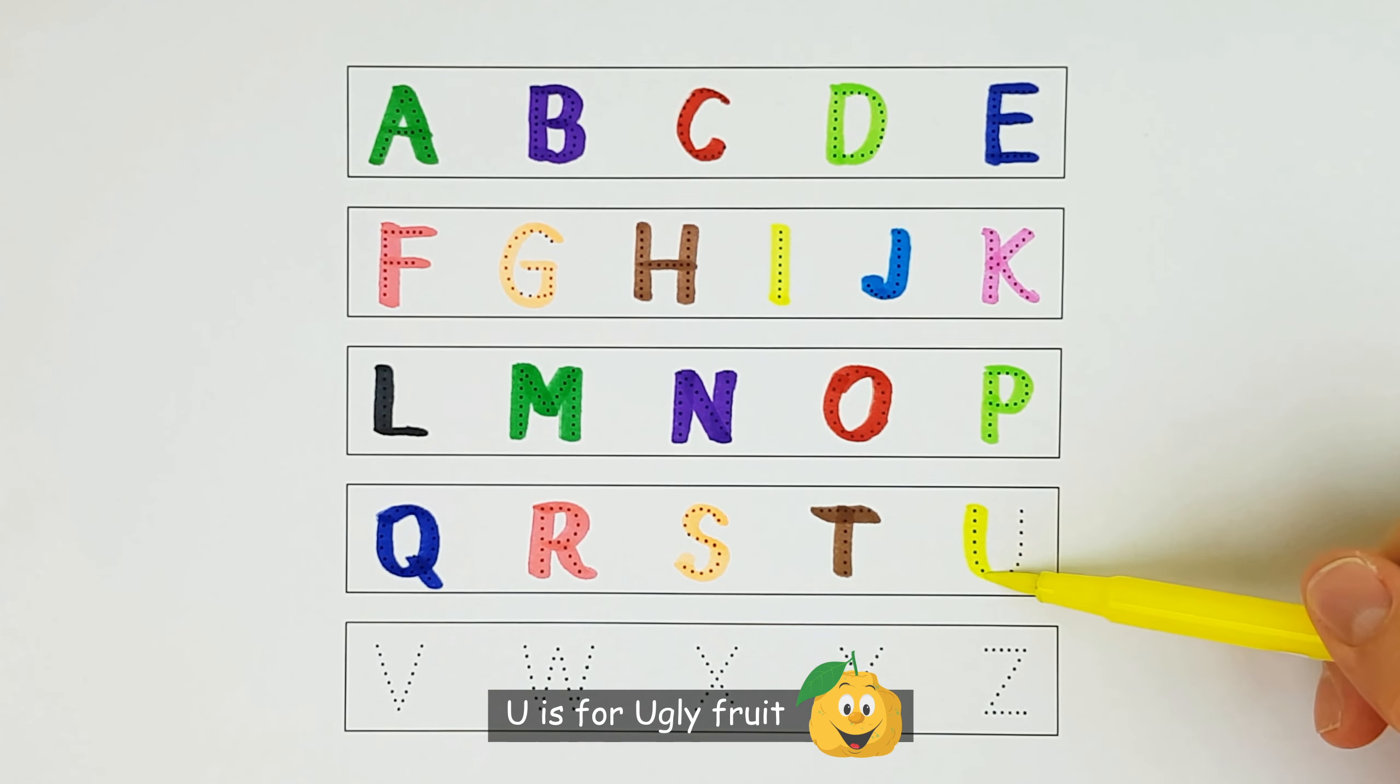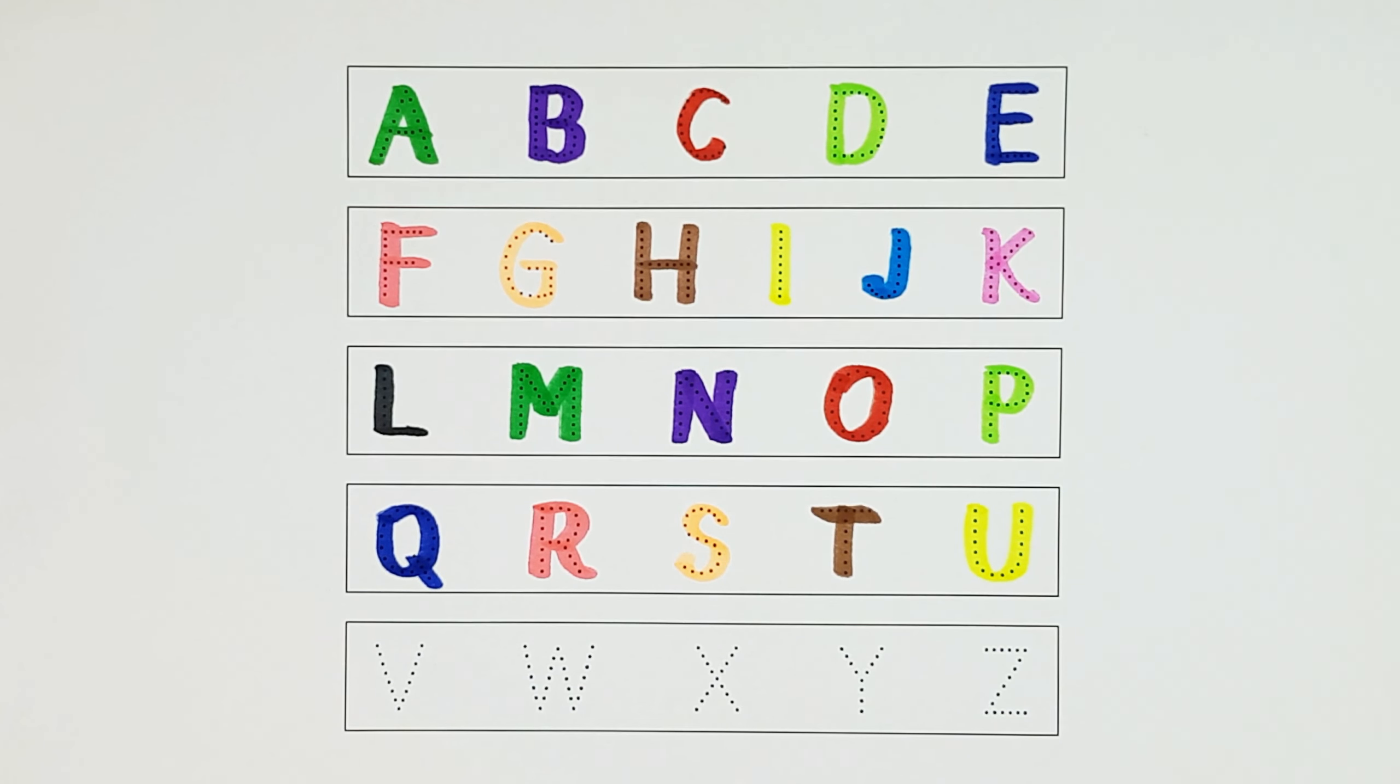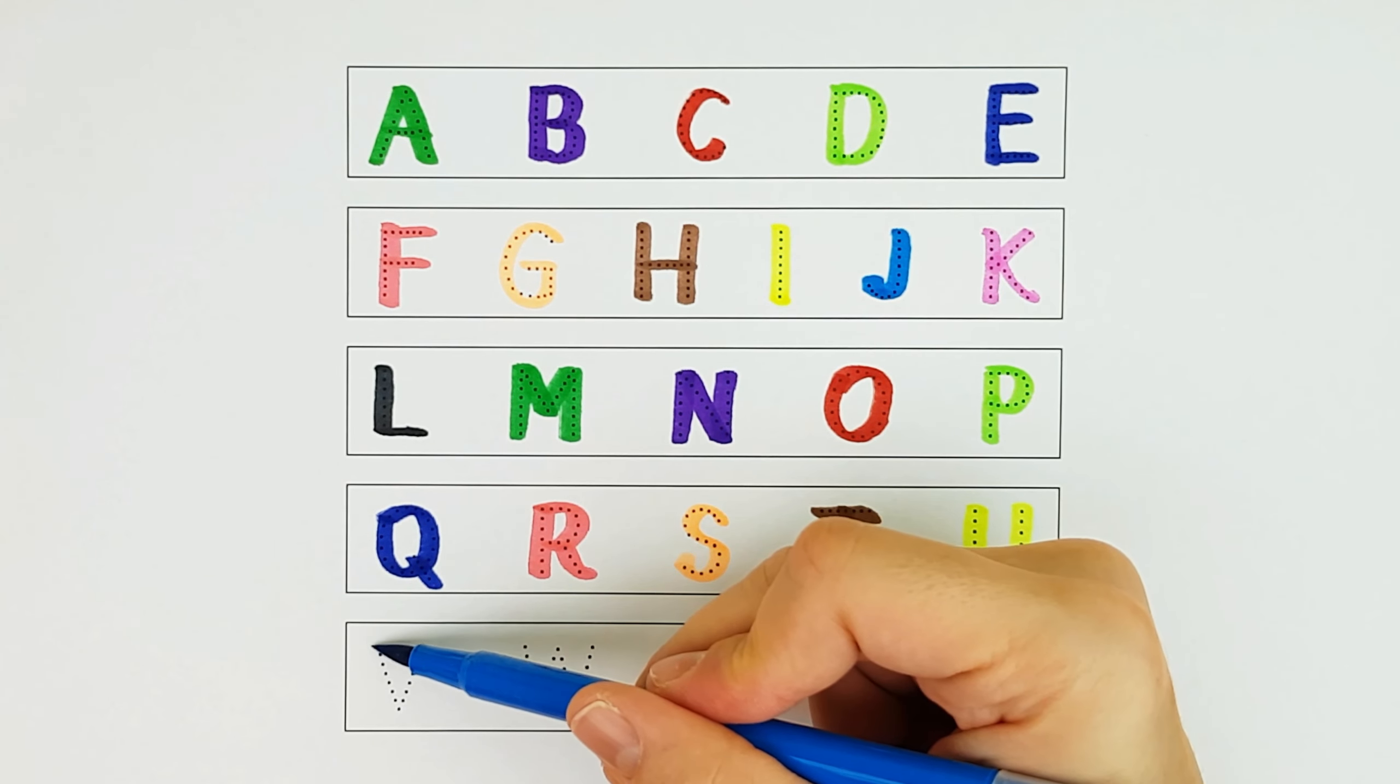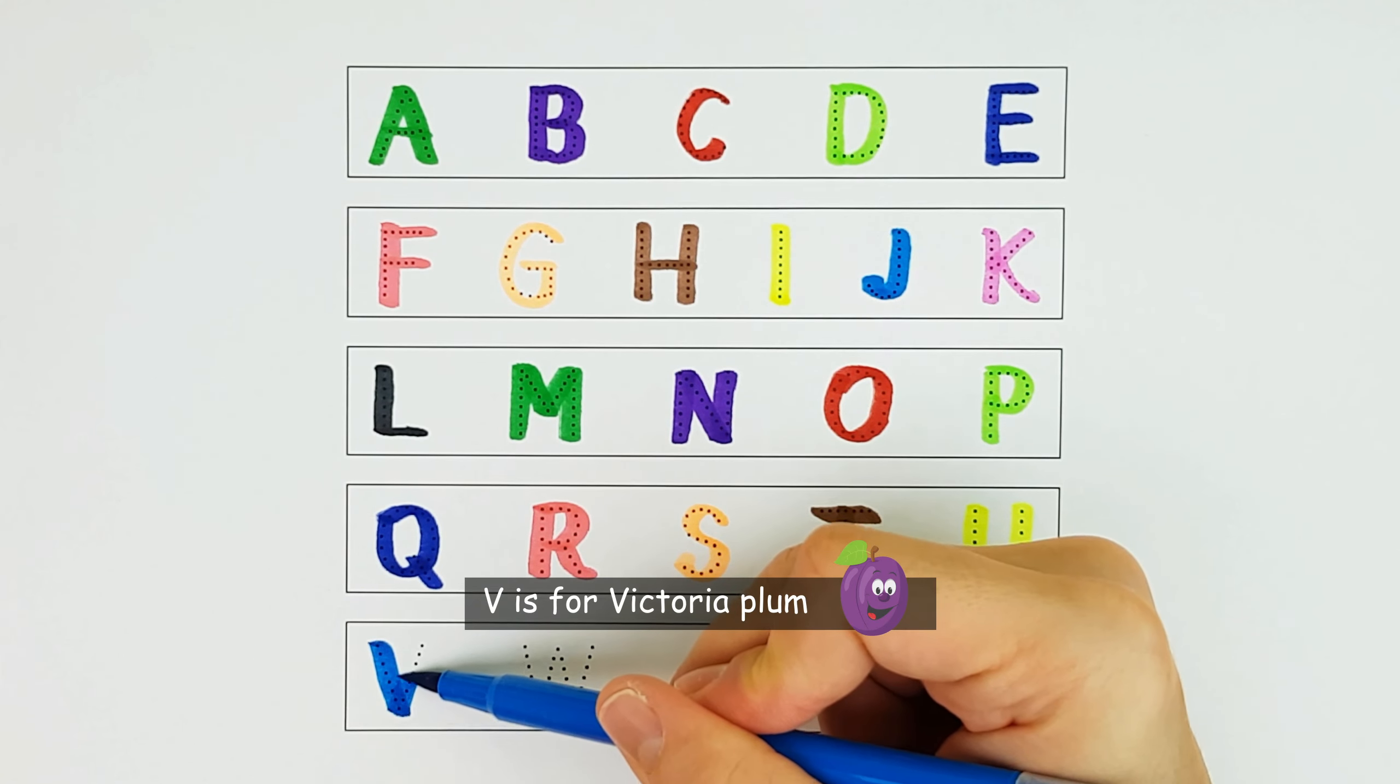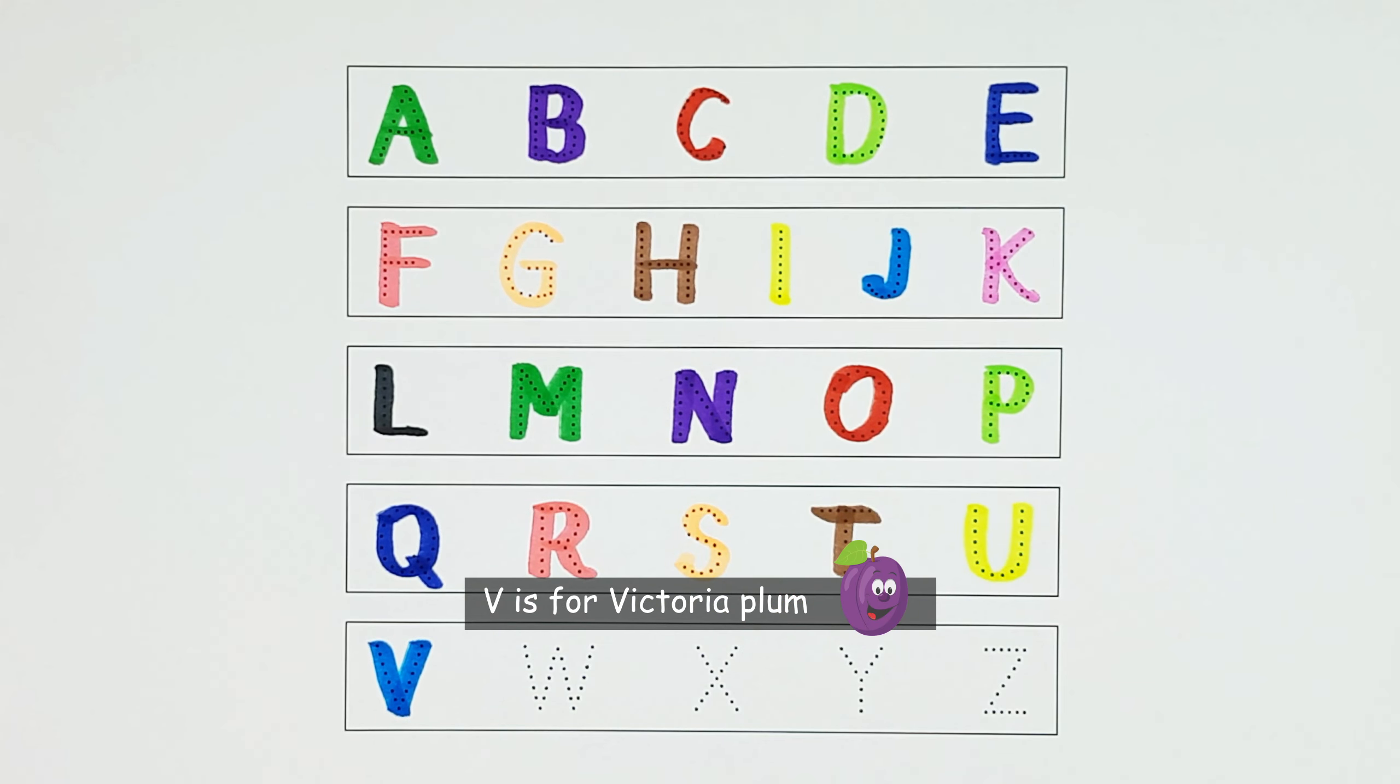U. U is for ugly fruit. V. V is for Victoria Plum.